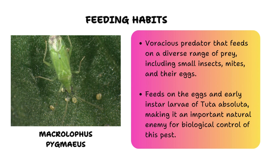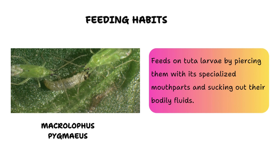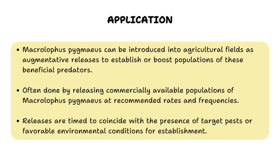By preying on Tuta absoluta eggs and larvae, Macrolophus pygmaeus helps suppress pest populations and contributes to natural control of infestations in tomato plants. It also employs a piercing-sucking mouthpart to puncture larvae and extract bodily fluids, ultimately causing their death. In terms of application, Macrolophus pygmaeus is introduced into fields as augmentative releases at recommended rates and frequencies, timed to coincide with the presence of target pests and favorable environmental conditions.